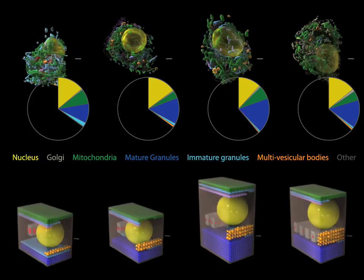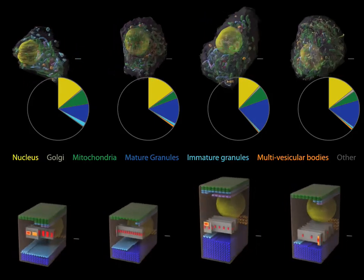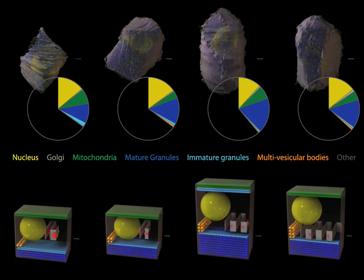This information is much easier to absorb by looking at the simplified cells on the bottom row rather than by mentally merging the information from the original models in the top row with the quantification information in the pie chart shown in the middle row.